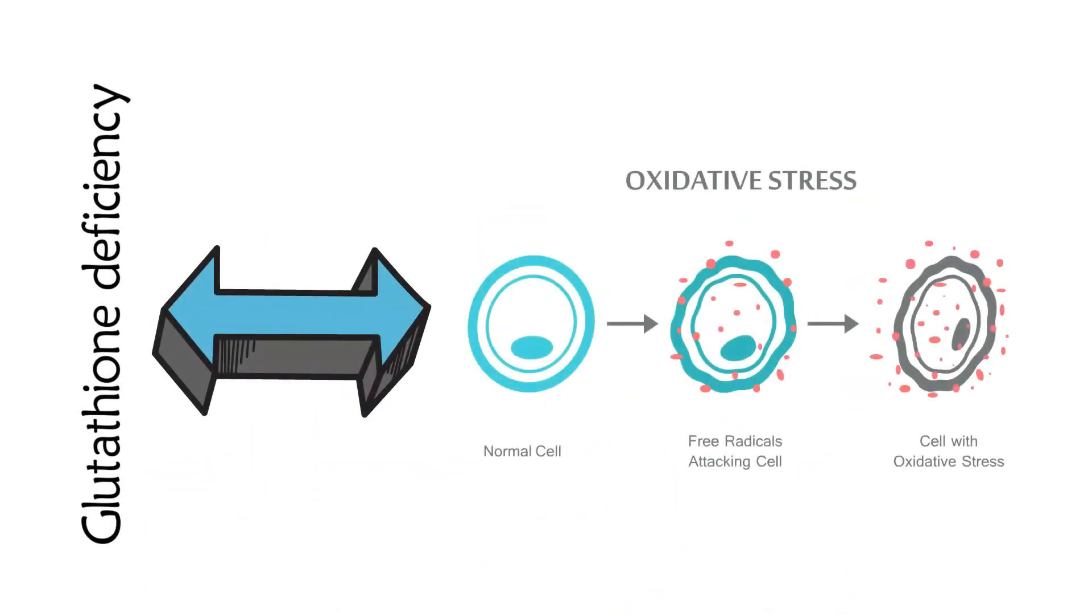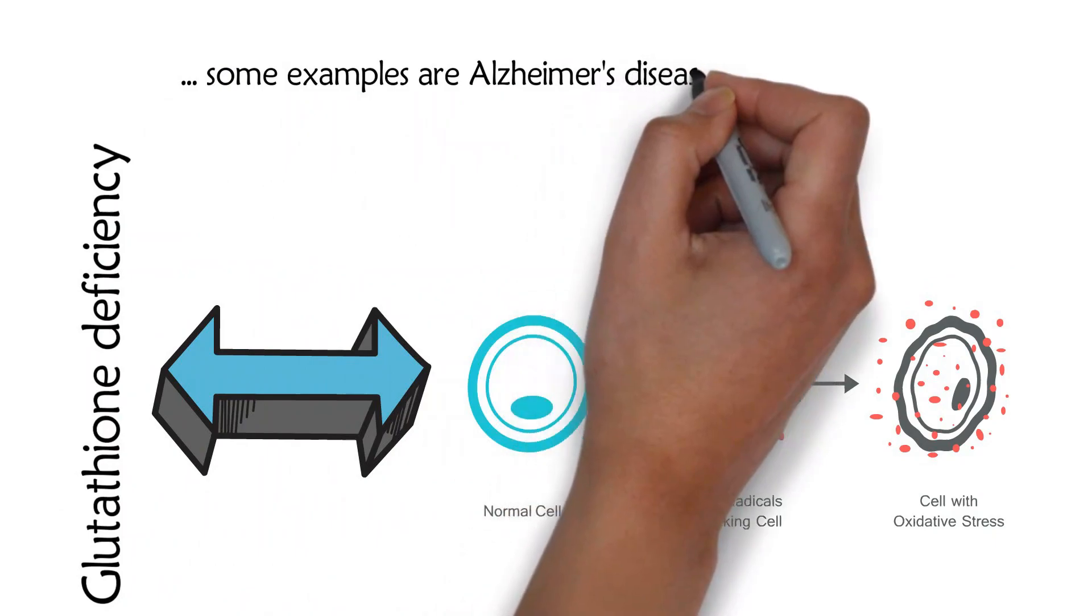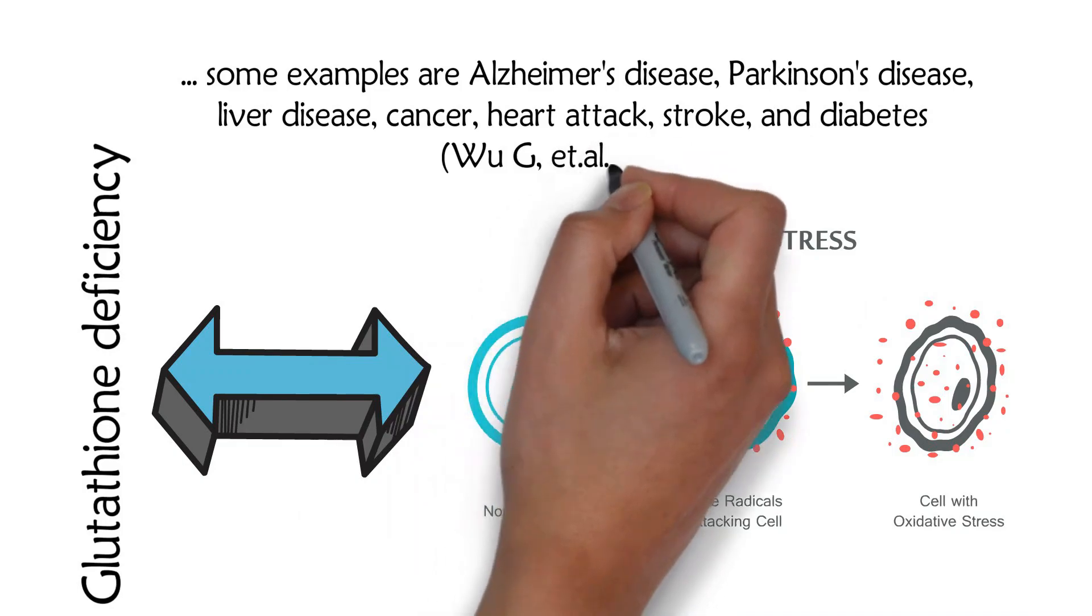Glutathione deficiency contributes to oxidative stress, which plays a key role in aging and the pathology of many diseases. Some examples are Alzheimer's disease, Parkinson's disease, liver disease, cancer, heart attack, stroke, and diabetes.